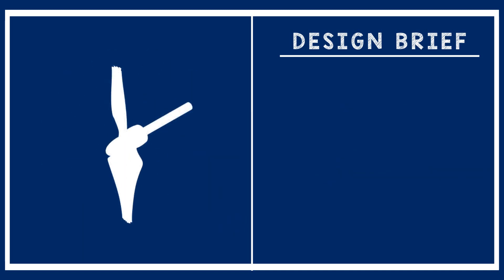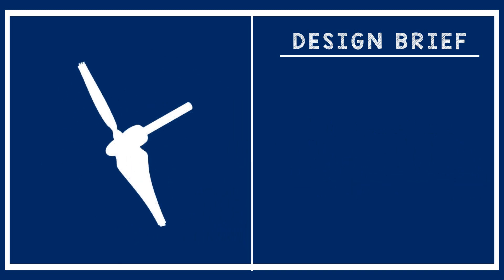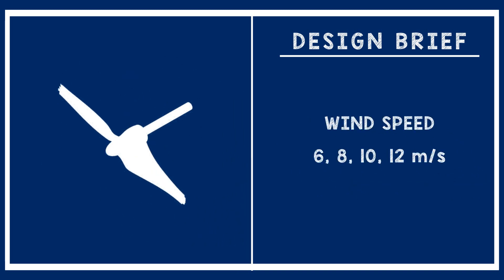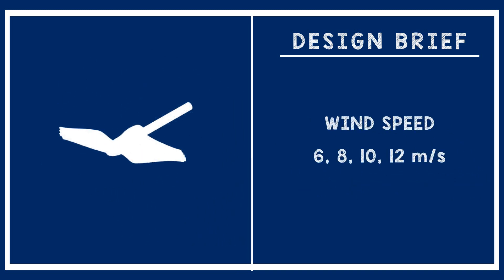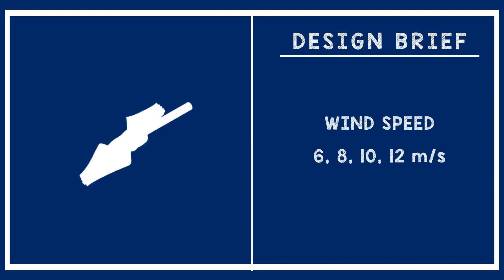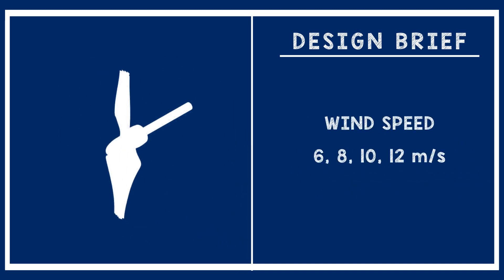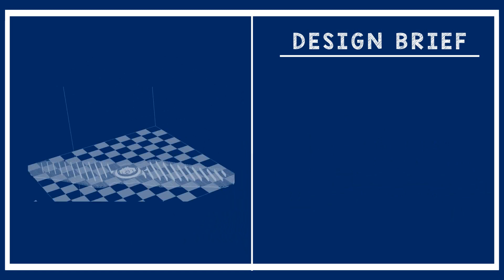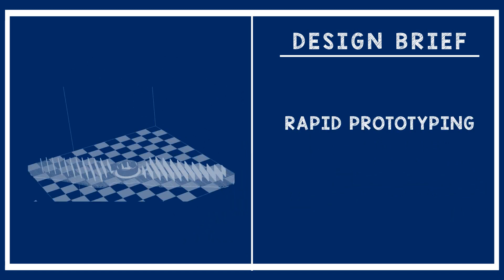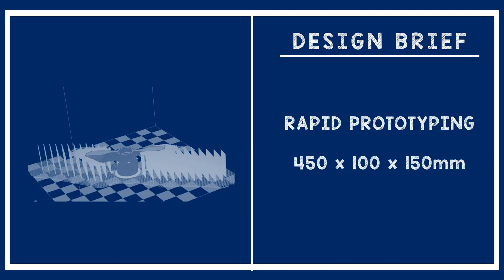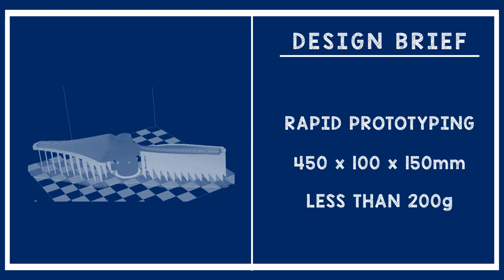The turbine should be tested at wind speeds of 6, 8, 10, and 12 m/s. In terms of manufacturing, rapid prototyping should be used with dimensions restricted to 400 x 100 x 150 mm and weight restricted to 200 grams.